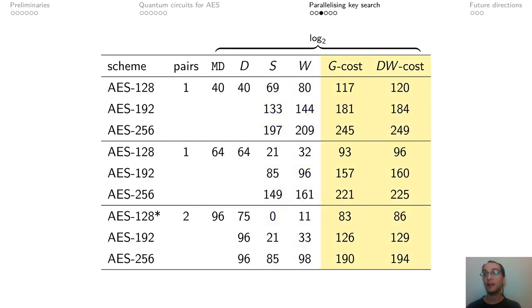And then, if we look at the gate cost and depth times width cost, again in the most extreme case we might need executing 2 to the 245 quantum gates. So overall, it might result in being more expensive than running classical key search instead.